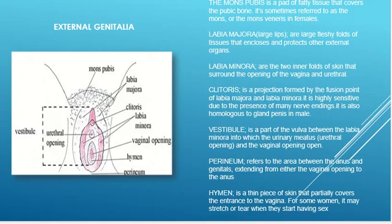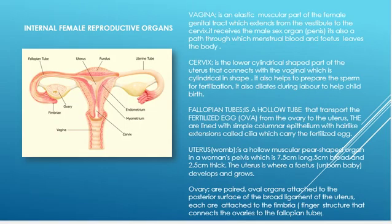The hymen is a thin skin that partially occludes the opening of the vagina. The hymen can be torn either during vigorous exercise or by sex. We also have the perineum, which basically refers to the area between the anus and the genitals.